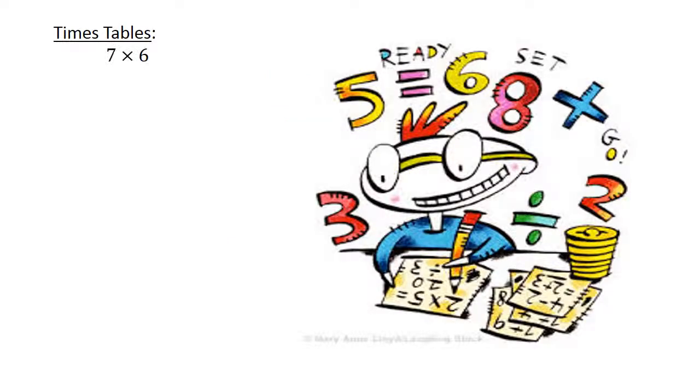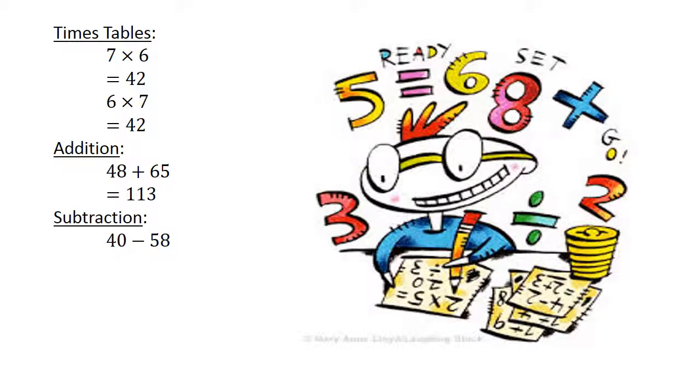Times table: 7 times 6 equals 42. 6 times 7 equals 42. Addition: 48 plus 65 equals 113. Subtraction: 40 minus 58 equals negative 18. Division: 30 divided by 6 equals 5.